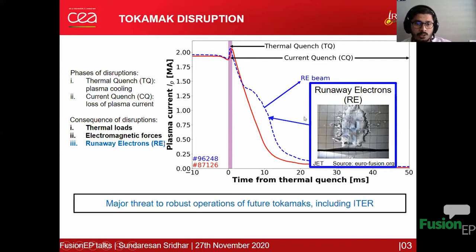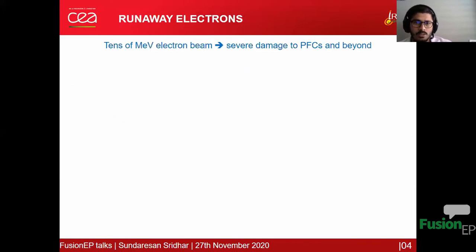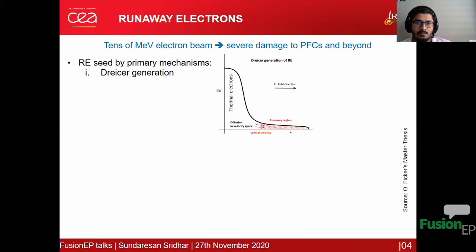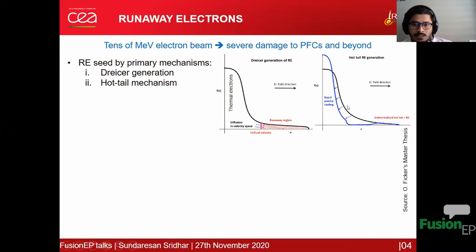Tokamak disruption is a major threat to robust operation of future tokamaks including ITER because of the risks it carries. In my PhD thesis I concentrate on the runaway electron consequence of disruption. A runaway electron is an energetic electron beam with energy roughly in tens of MeV, causing severe damage to plasma-facing components and structures beyond them. The runaway electron seed is primarily generated by the Dreicer mechanism, in which thermal electrons diffuse in velocity space to the runaway region, and the hot-tail mechanism, in which during rapid plasma cooling there is a tail of unthermalized hot electrons which run away in phase space.